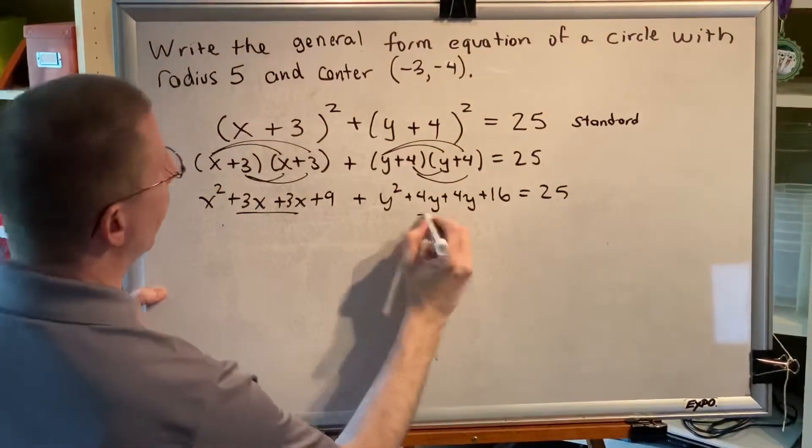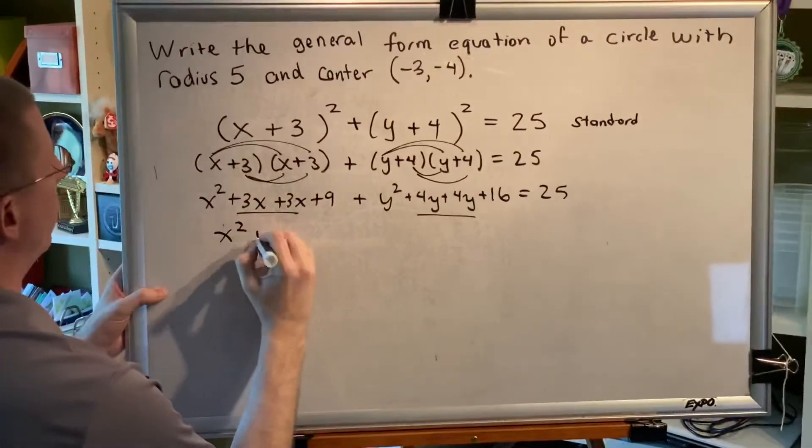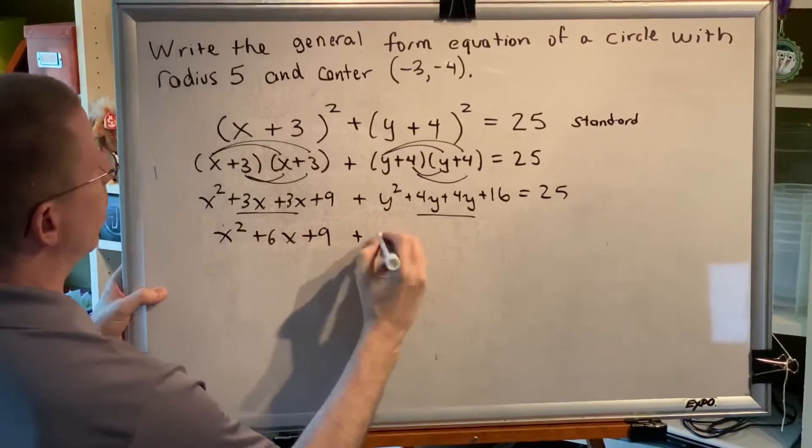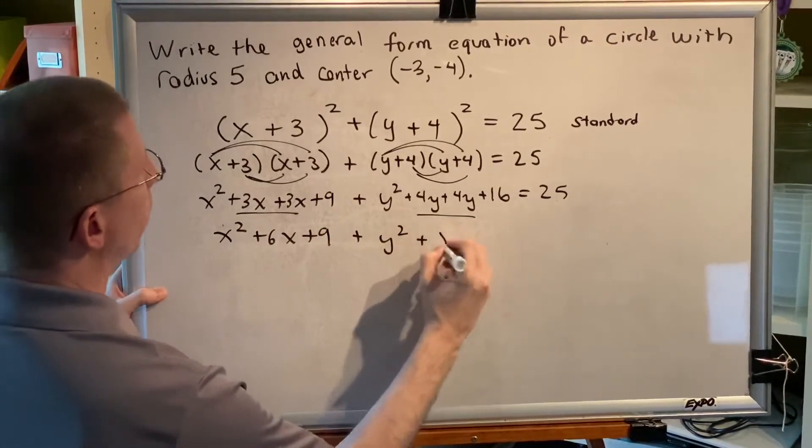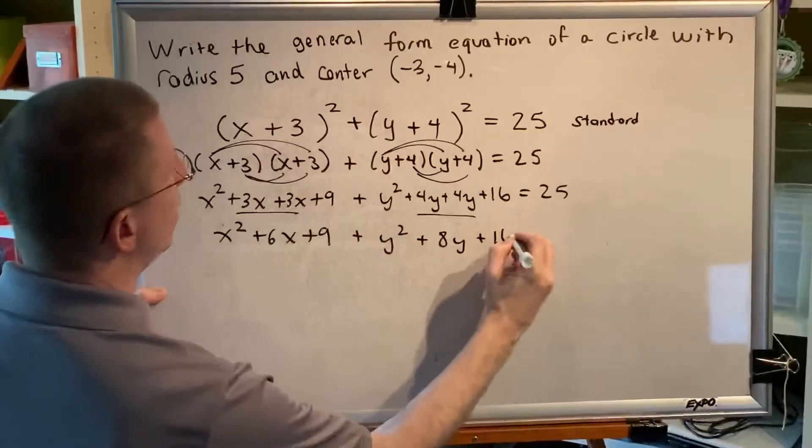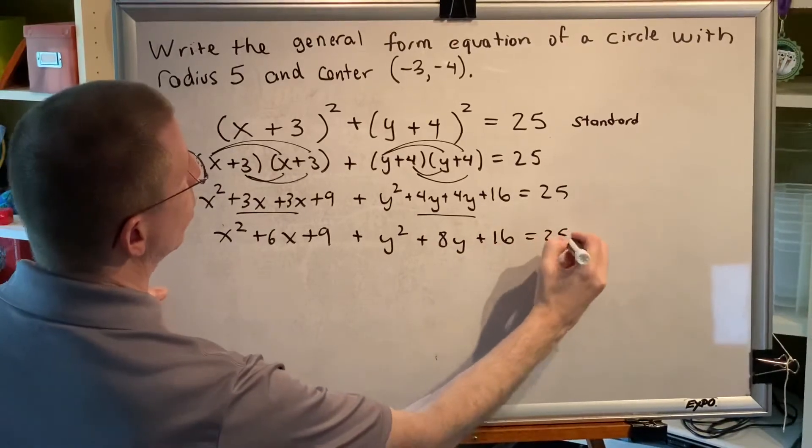Combining the like terms, x² + 6x + 9 plus y² + 8y + 16 equals 25.